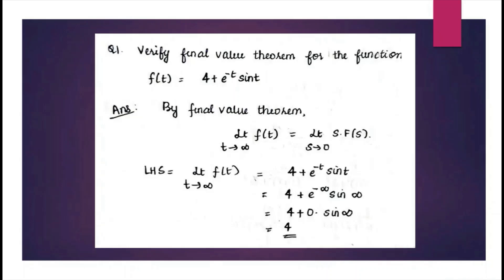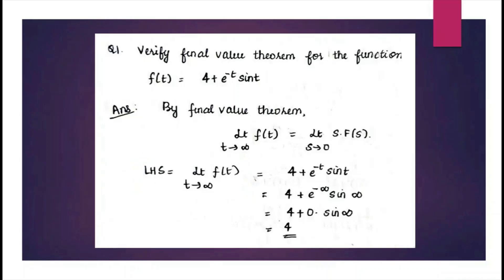If asked to verify the final value theorem, you must find both LHS and RHS. For the function f(t) = 4 + e^(−t)·sin(t), find the LHS by substituting t → ∞. Since e^(−∞) = 1/e^∞ = 0, the term e^(−t)·sin(t) → 0, so the LHS equals 4.